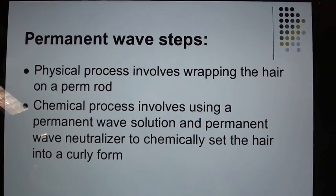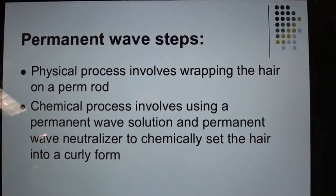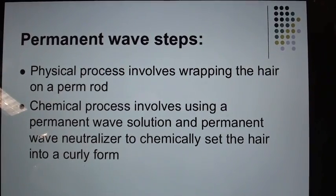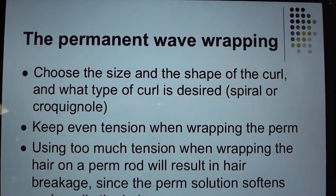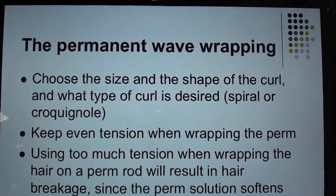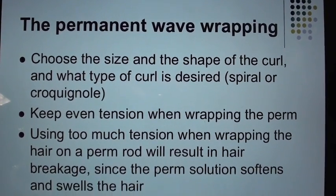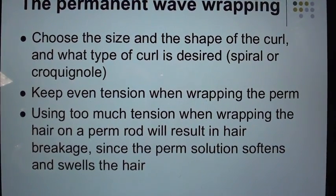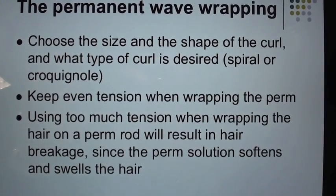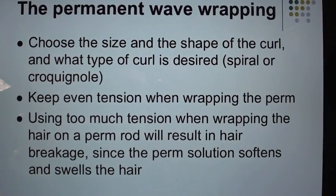Permanent wave steps: The physical process involves wrapping the hair on a perm rod. The chemical process involves using a permanent wave solution and permanent wave neutralizer to chemically set the hair into a curly form. When wrapping, choose the size and shape of the curl and what type of curl is desired — spiral or croquignole. Keep even tension when wrapping; using too much tension will result in hair breakage since the perm solution softens and swells the hair.